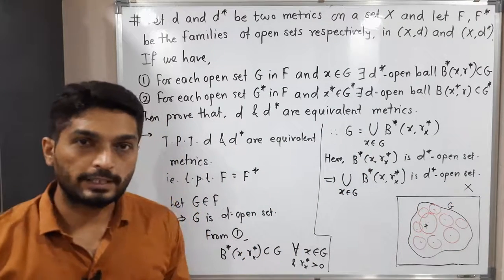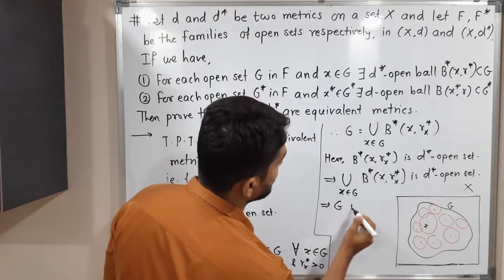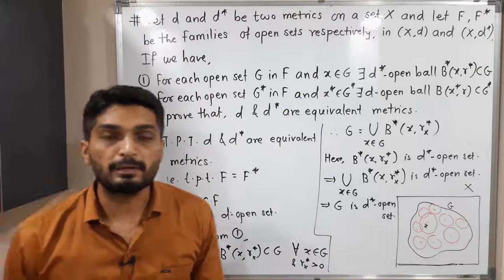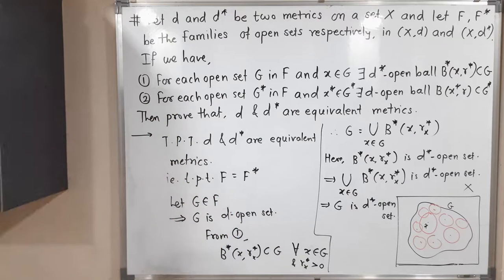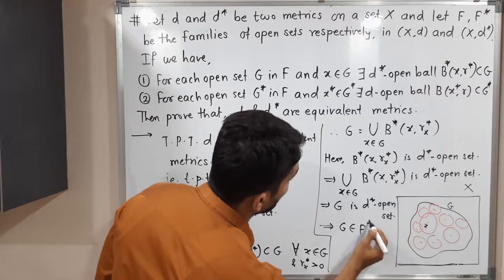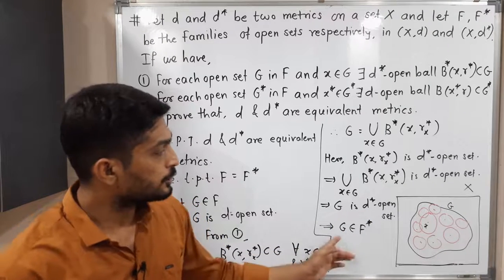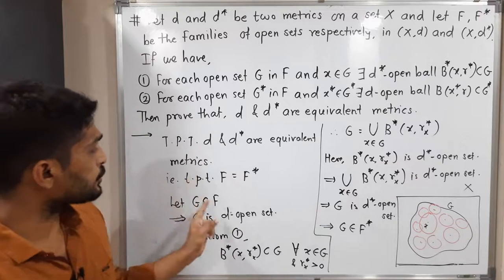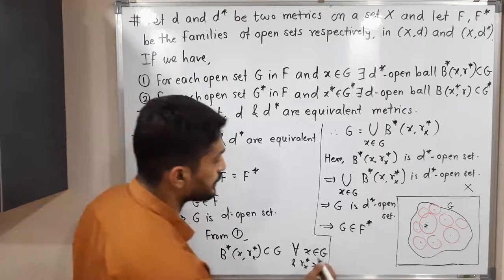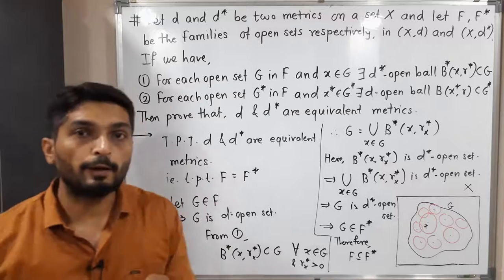The reason: arbitrary union of open sets is open. But this union is nothing but G. So G is a D*-open set. Since F* is a family of D*-open sets and G is a D*-open set, therefore G belongs to F*. We started with G belonging to F and finally got G belonging to F*. Therefore F is a subset of F*.